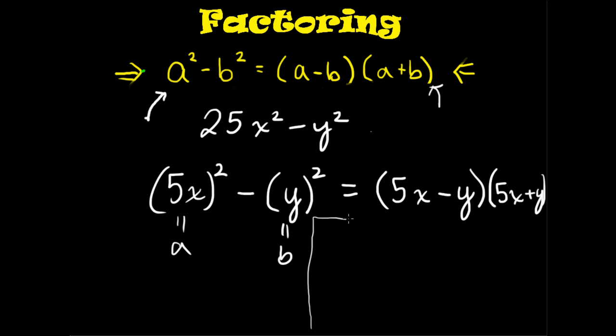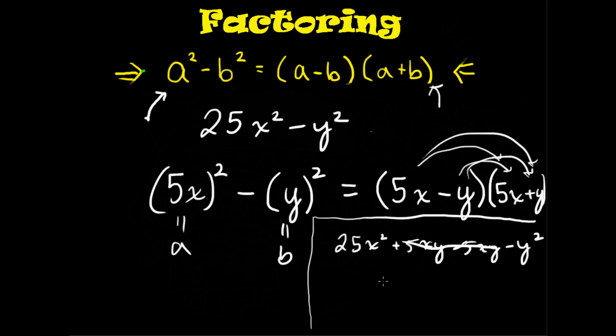That is your factored answer. And if you want to check your answer, distribute through both terms. Which gives you, for the first one, 25x squared plus 5xy minus 5xy minus y squared. 5xy and negative 5xy produce zero. And you're left with 25x squared minus y squared, which is what we started with.